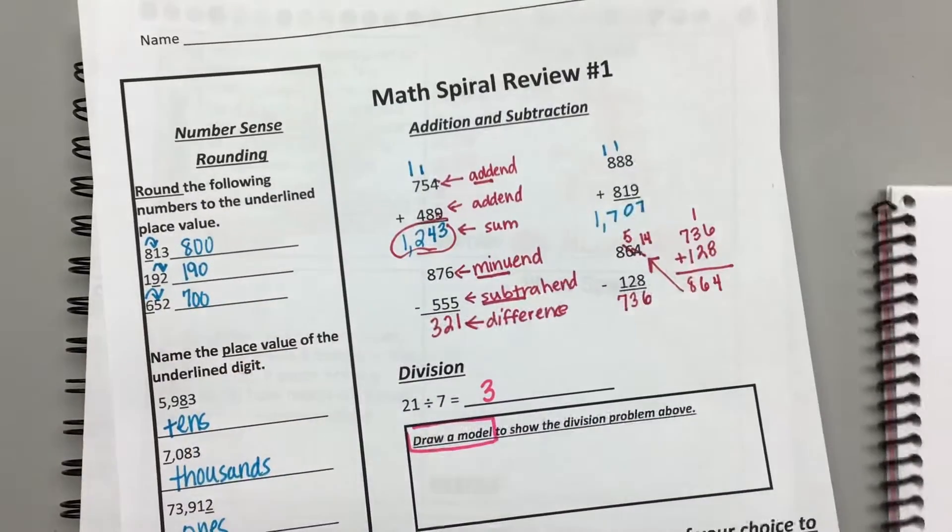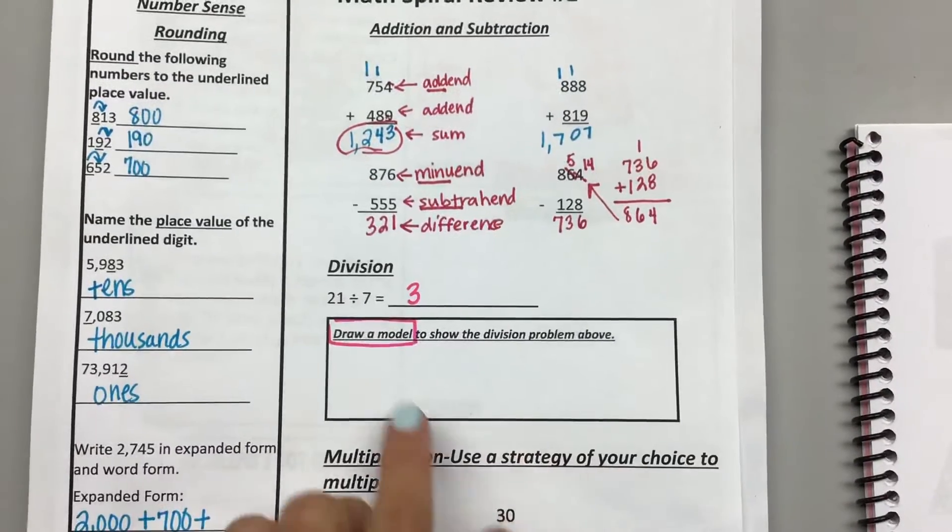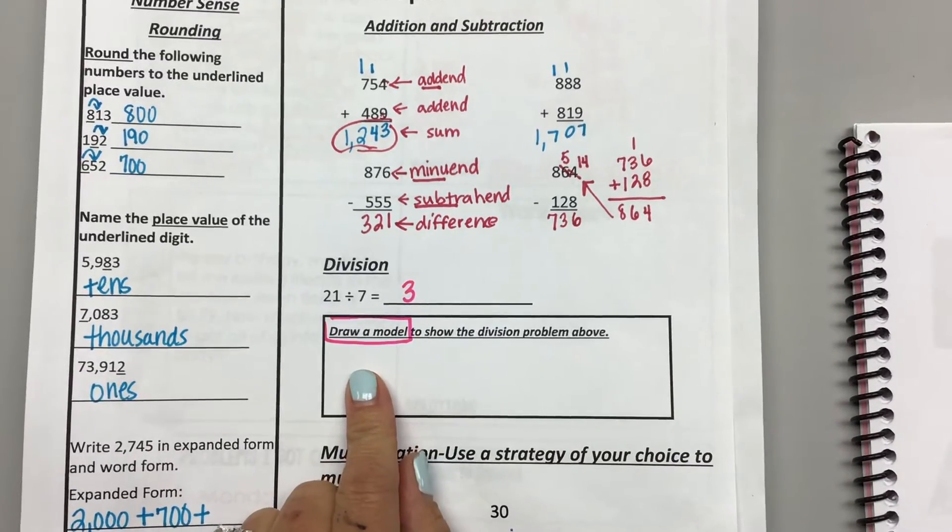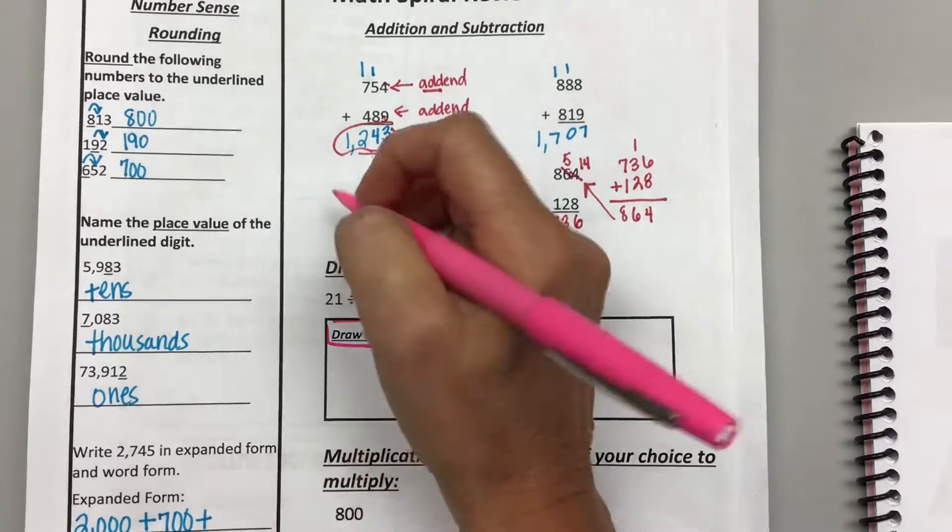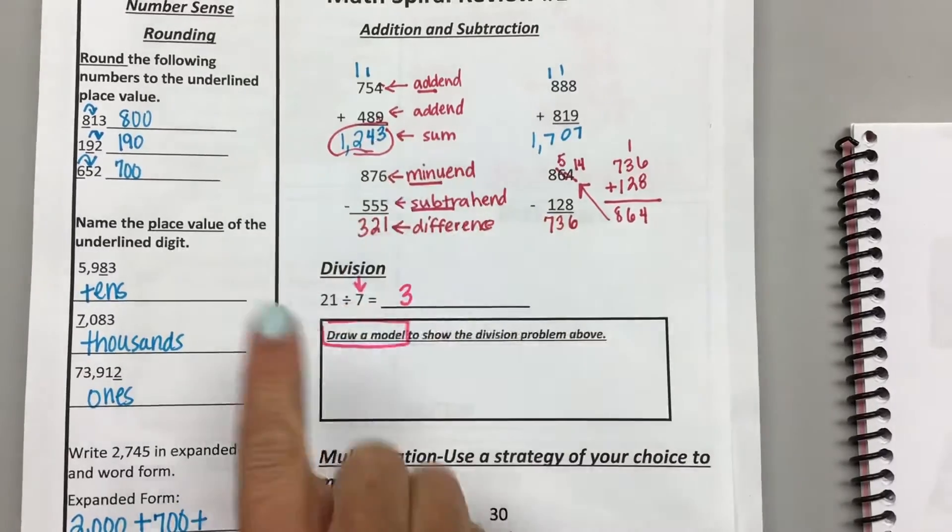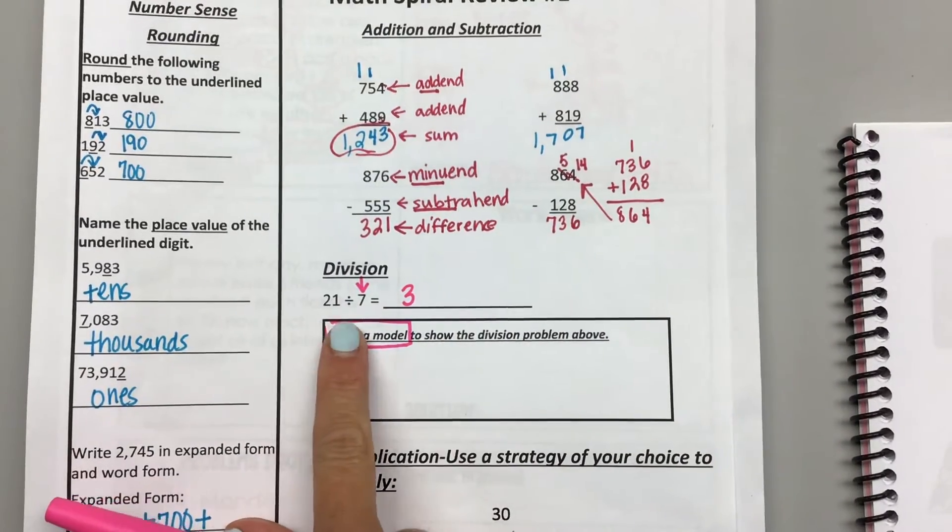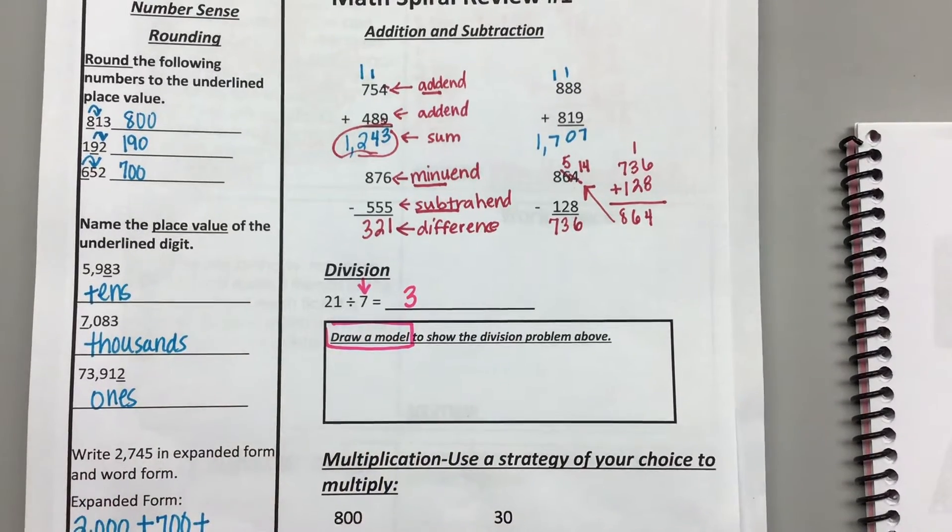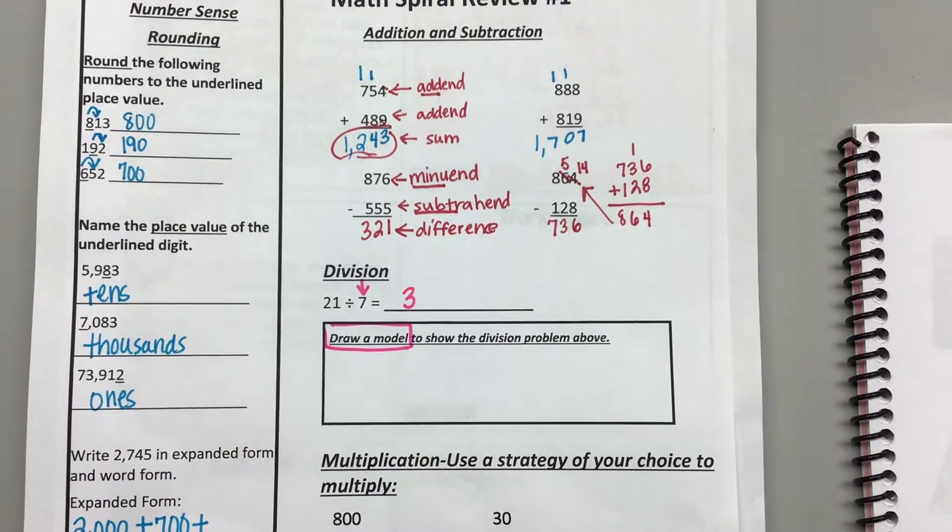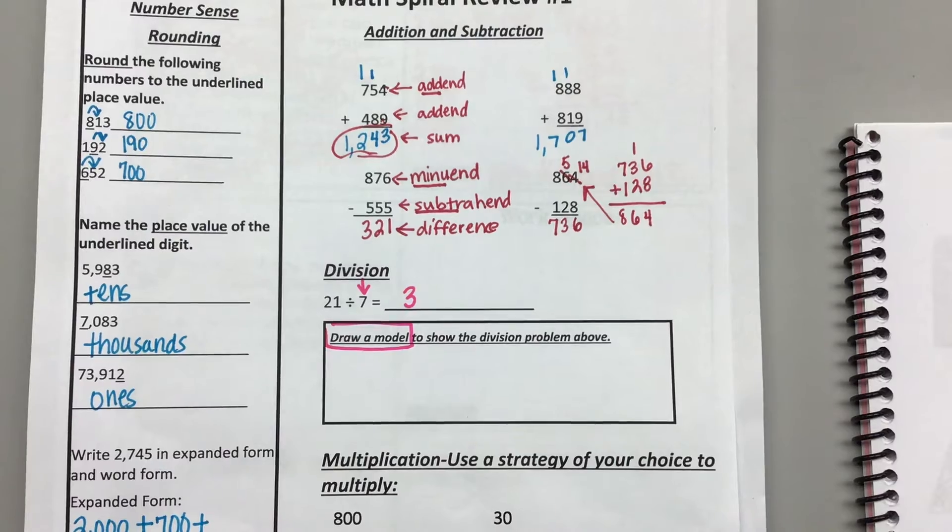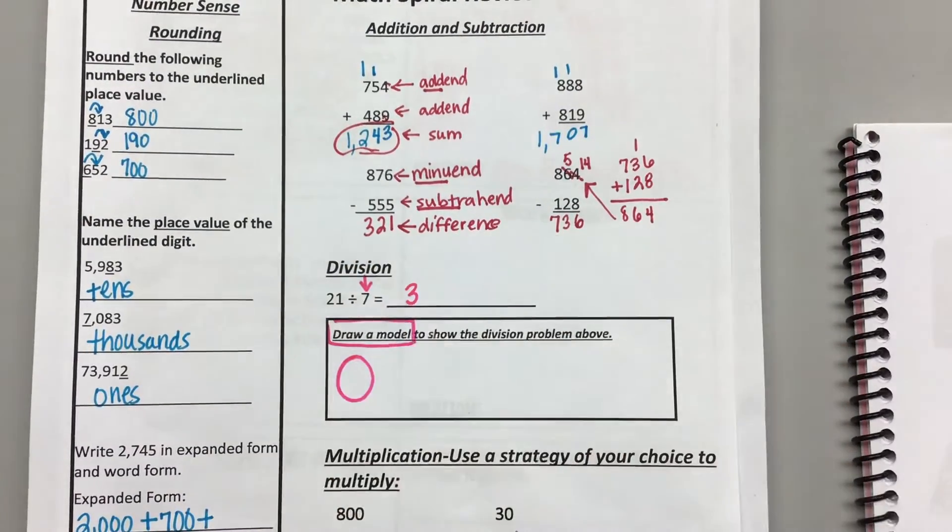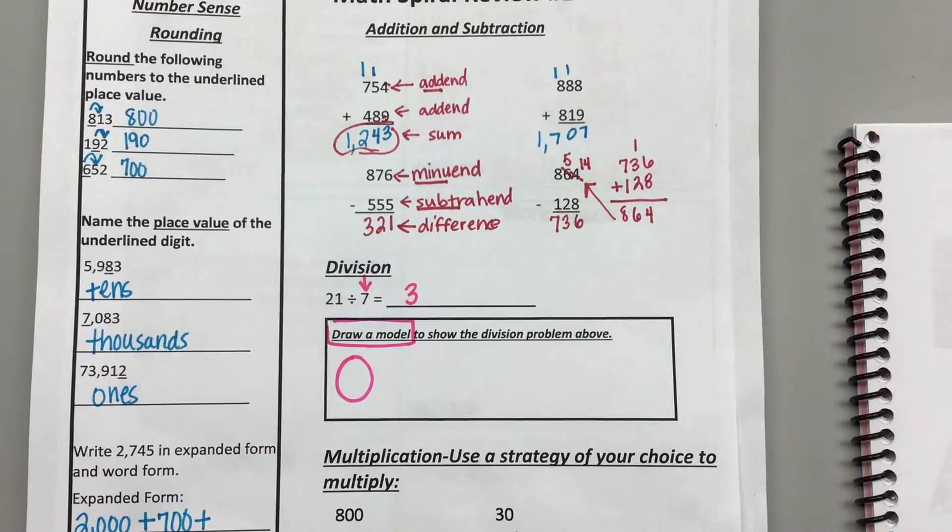Our division model looks a little bit different. So remember, when we divide, we're putting things into equal groups. In this problem, we're asked to put 21 into 7 equal groups. So our model needs to show 7 equal groups. Okay, you can draw a circle for a group, you can draw a square for a group.